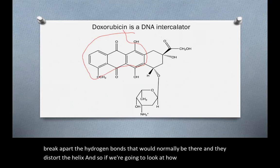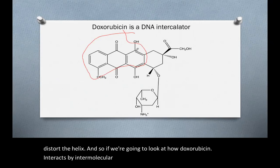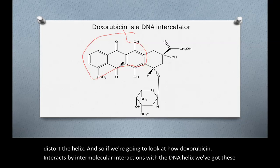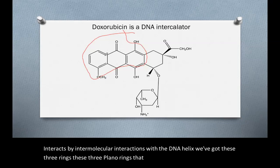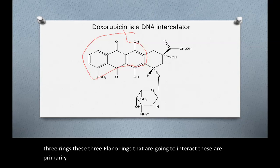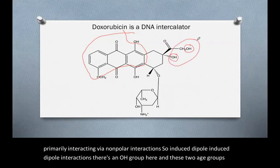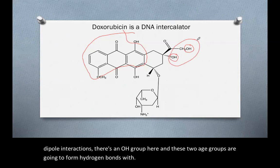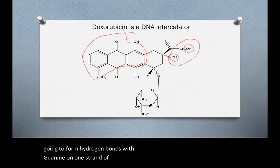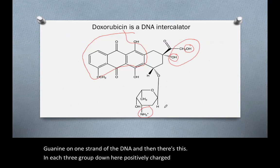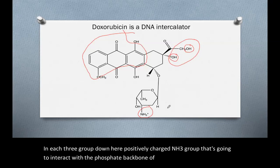And so if we're going to look at how doxorubicin interacts by intermolecular interactions with a DNA helix, we've got these three rings, these three planar rings that are going to interact. These are primarily interacting via nonpolar interactions, so induced dipole, induced dipole interactions. There's an OH group here and an OH group here, and these two OH groups are going to form hydrogen bonds with guanine on one strand of the DNA. And then there's this NH3 group down here, positively charged NH3 group that's going to interact with the phosphate backbone of a guanine on the opposite strand.